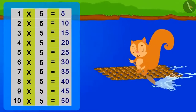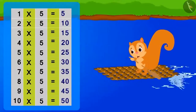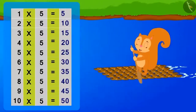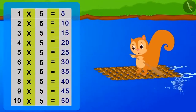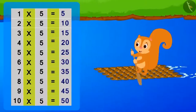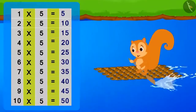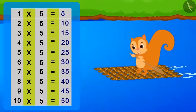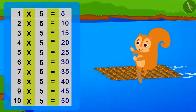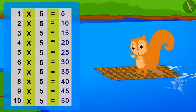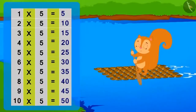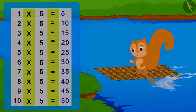Five ones are five, five twos are ten, five threes are fifteen, five fours are twenty, five fives are twenty-five, five sixes are thirty, five sevens are thirty-five, five eights are forty, five nines are forty-five, five tens are fifty.